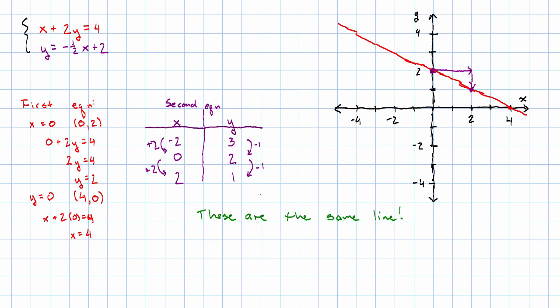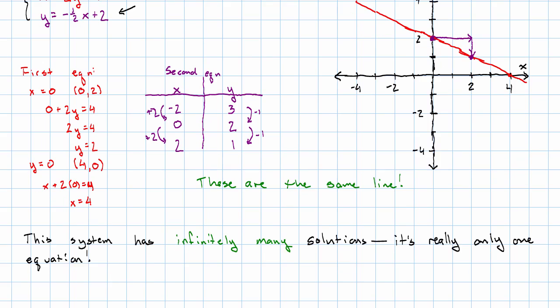In this situation we see that this system has infinitely many solutions. But this system is really only one equation. Another way to think about it is these two equations are equivalent. If I were to take this equation and solve it for y, I would get this equation. In the picture we see that both graphs are the same line. If we were to rewrite these equations in slope intercept form, we would see that they have the same slope and the same y intercept.